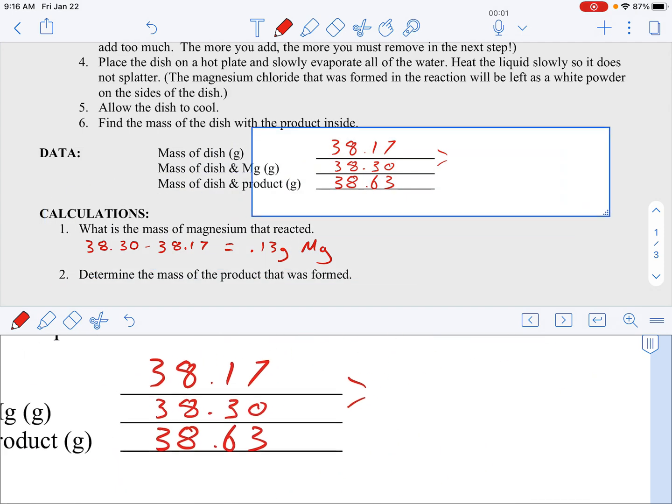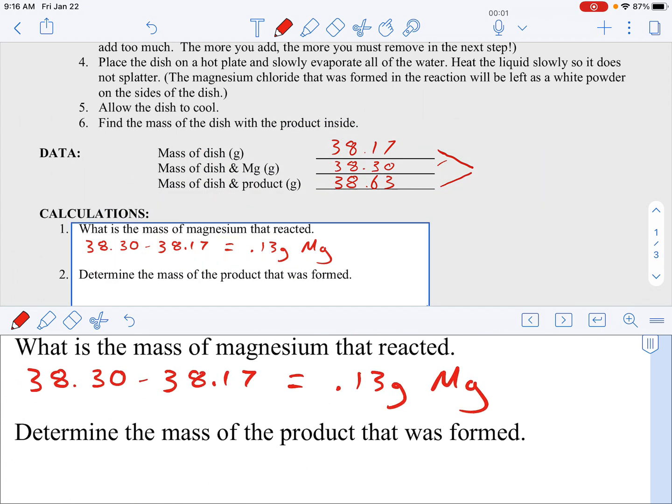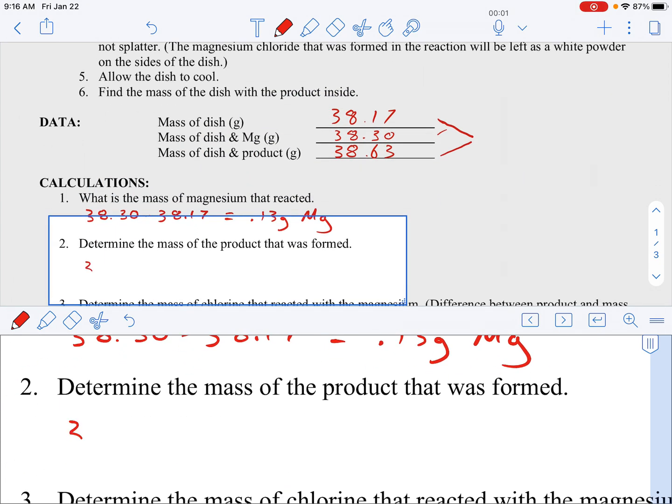The mass of the product that was formed, well, that's going to be the mass of the empty crucible and the mass of the product there. So 38.63 minus 38.17, and that's 0.46 grams.